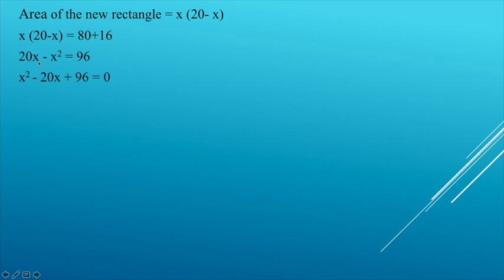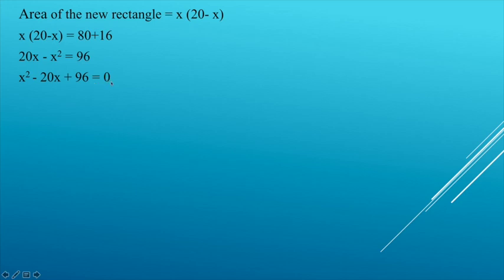Dividing the equation by minus 1, we get x squared minus 20x plus 96 equals 0. Using the quadratic formula, x equals minus b plus or minus the square root of b squared minus 4ac, divided by 2a.